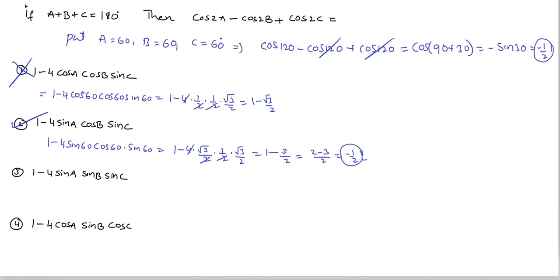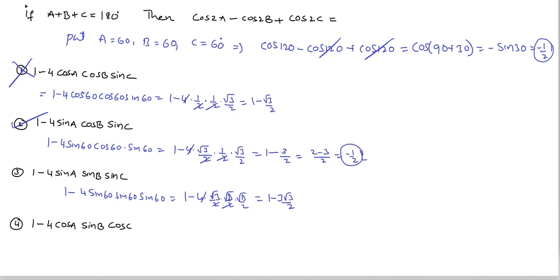Verify the third option also: 1 minus 4 sin a into sin b into sin c, that is 1 minus 4 into (root 3 by 2) into (root 3 by 2) into (root 3 by 2). The 4 cancels, giving 1 minus 3 root 3 by 2. So this is not equal to minus 1 by 2, and the third option is wrong.